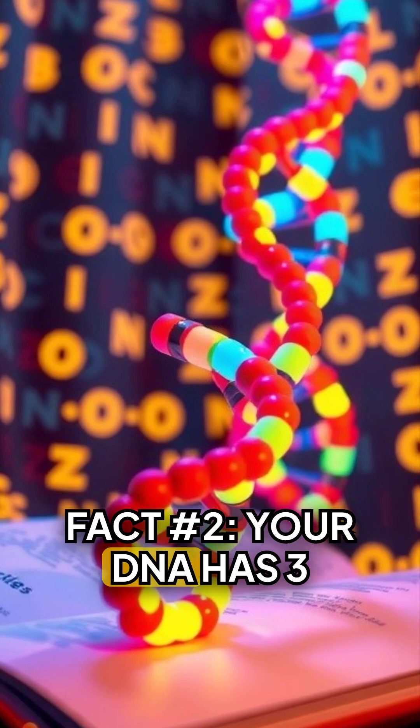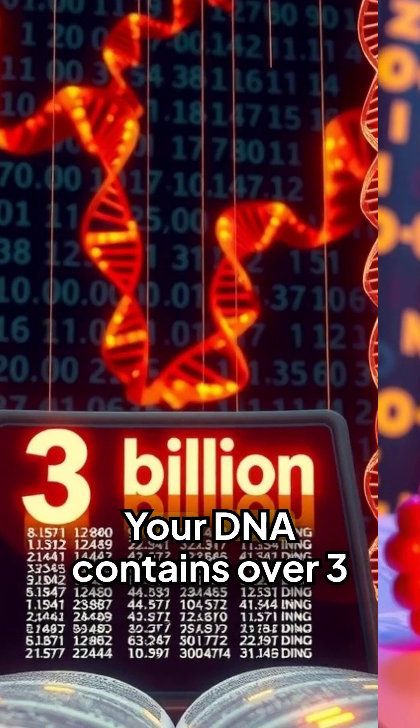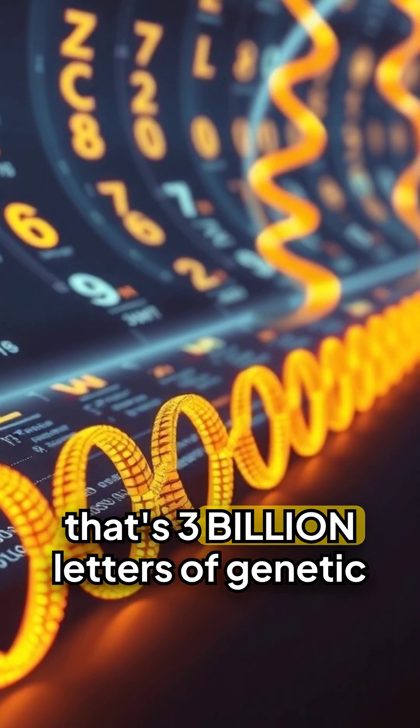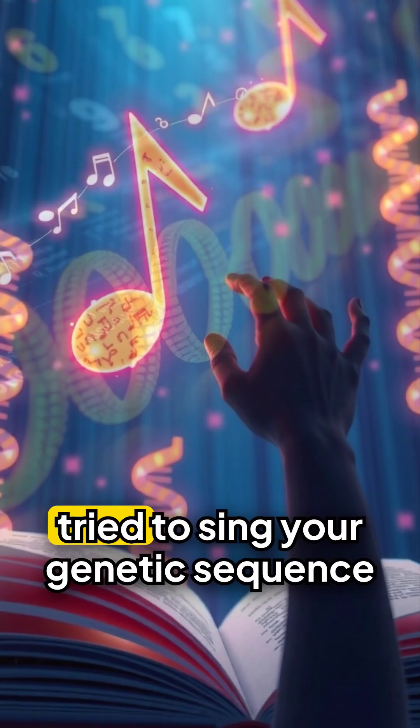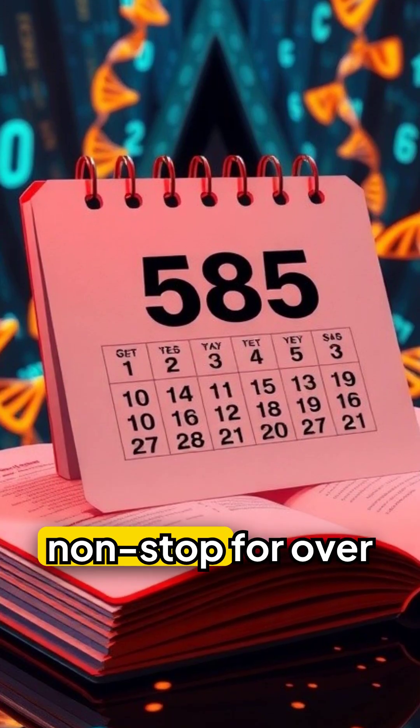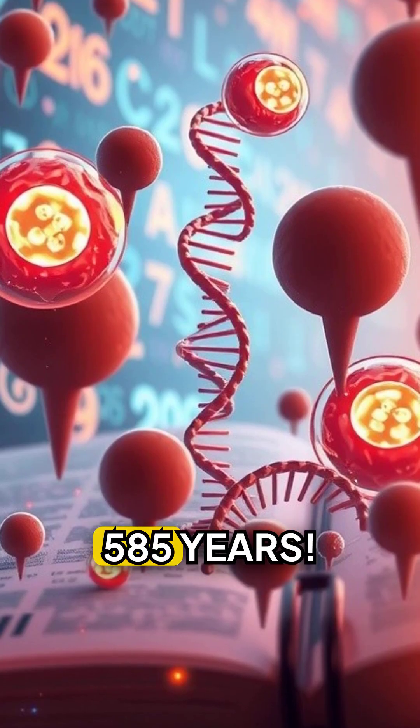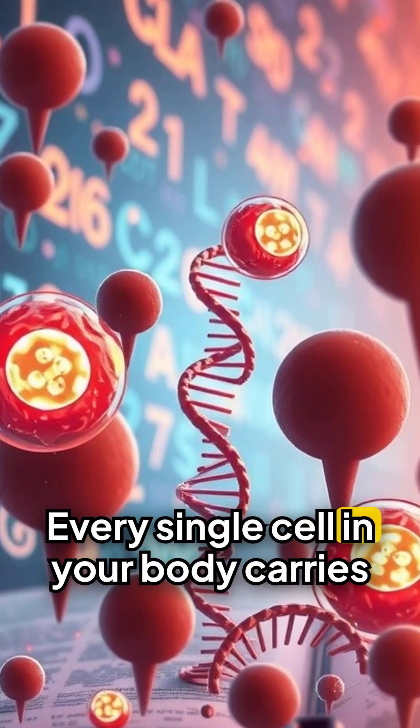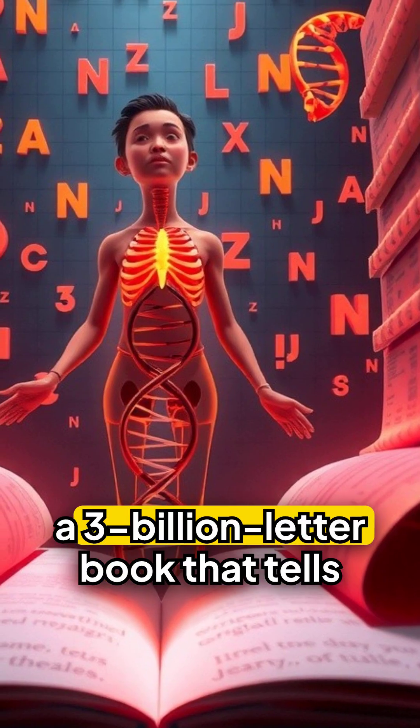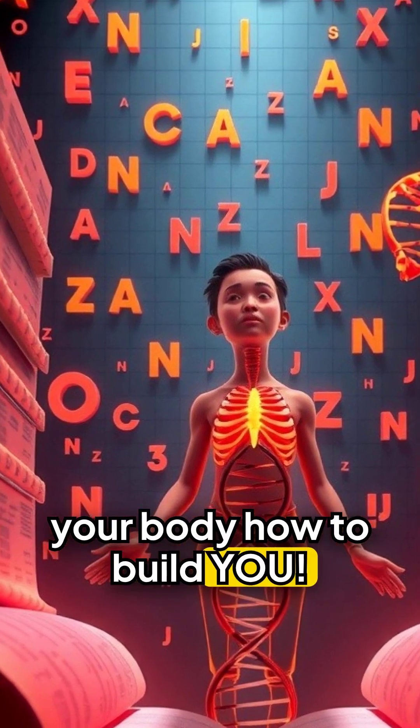Fact number 2. Your DNA has 3 billion instructions. Your DNA contains over 3 billion base pairs. That's 3 billion letters of genetic code. If you tried to sing your genetic sequence to the tune of the ABCs, you'd be singing non-stop for over 585 years. Every single cell in your body carries this complete instruction manual. Your DNA is basically a 3 billion letter book that tells your body how to build you.